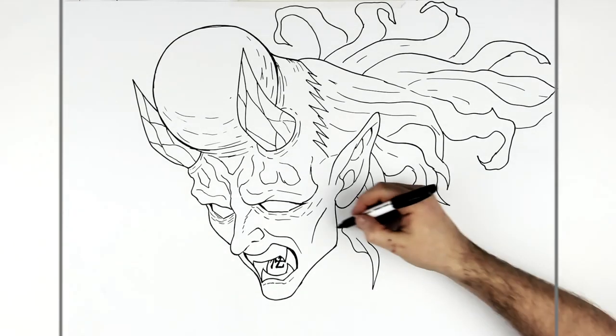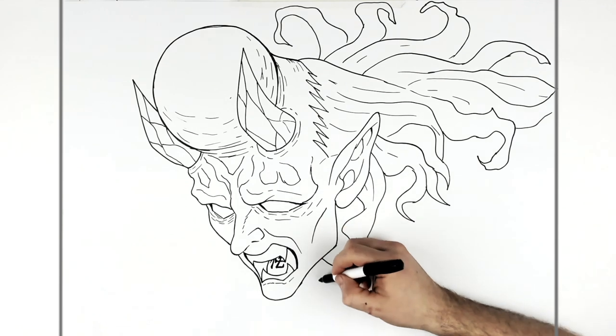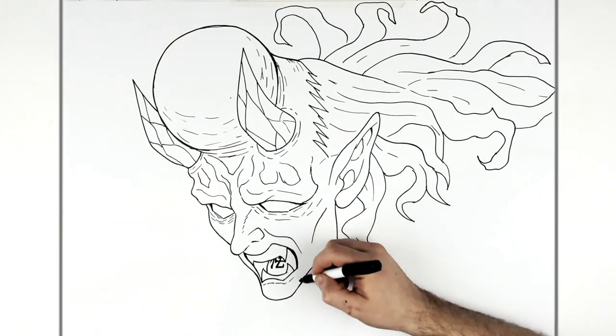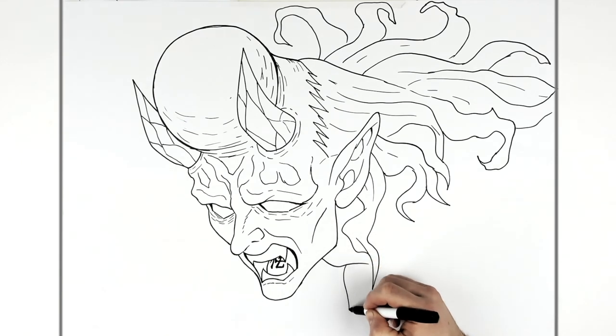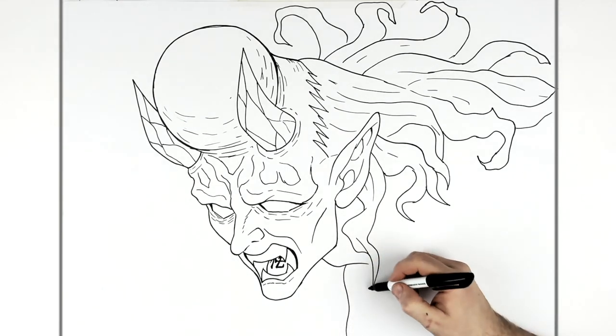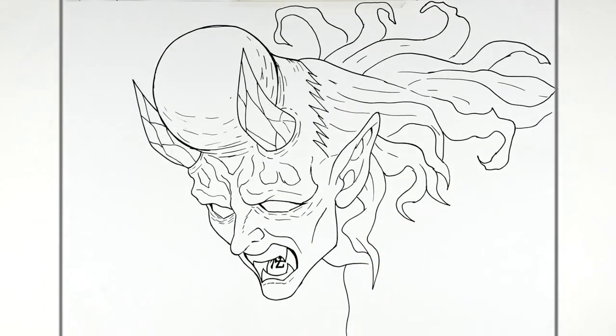Right, so then we can just see his Adam's apple, kind of his neck just there. And then his shoulder, so more hair on this side, but the shoulder sort of comes down on that side there.